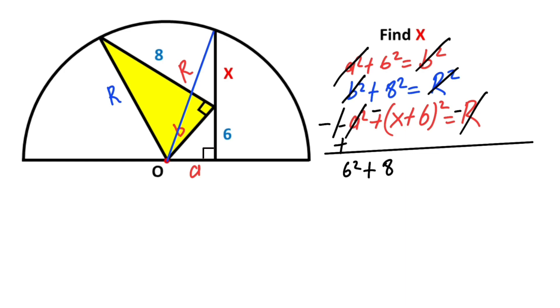So 6² + 8² - (x + 6)² = 0. Therefore, 36 + 64 = (x + 6)². So 100 = (x + 6)².